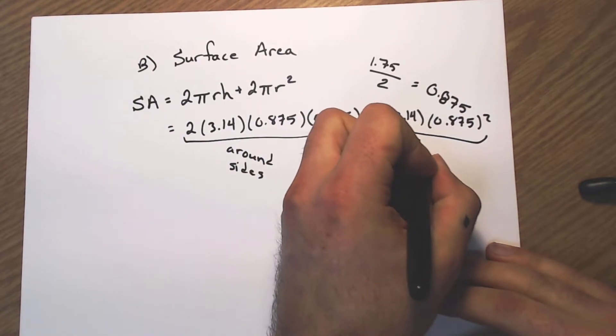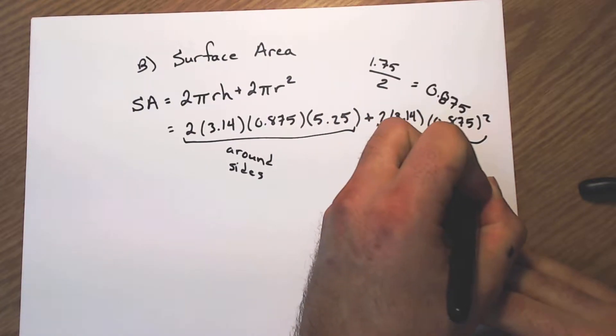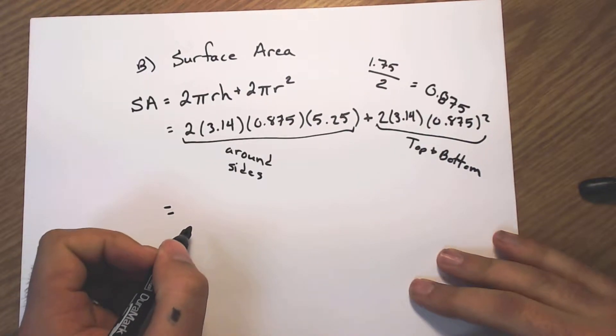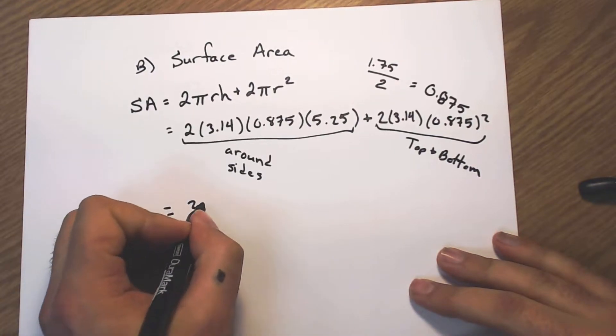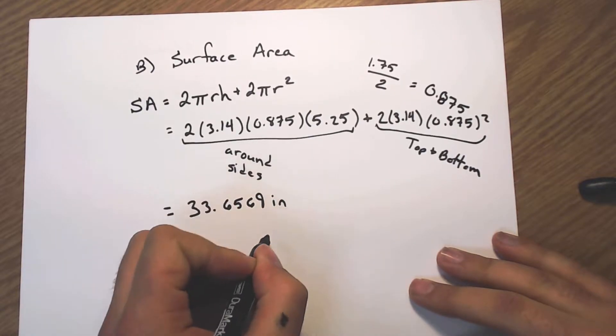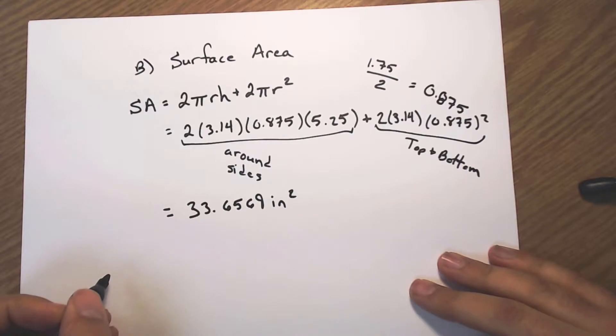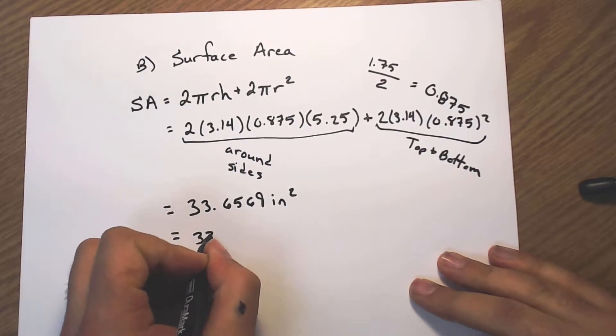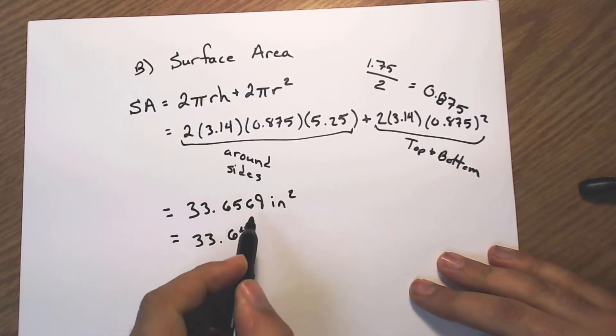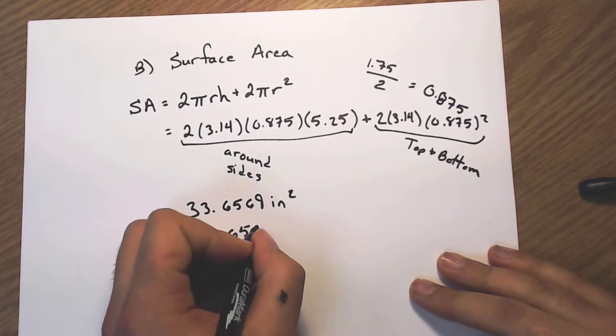This end chunk over here is all of my top and my bottom of my cylinder. Punch all of that into the handy dandy calculator, you get 33.6569, and that's inches squared because it's area. And we're going to round that a little bit differently too. We're going to go to the thousandths, so six five, that nine makes the six want to go up, so that becomes a seven inches squared. Surface area is now done.